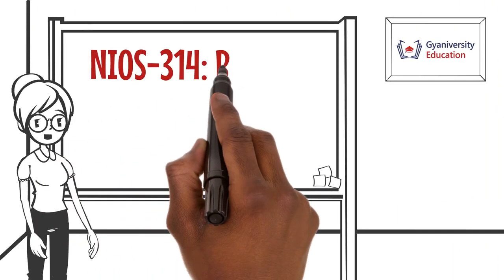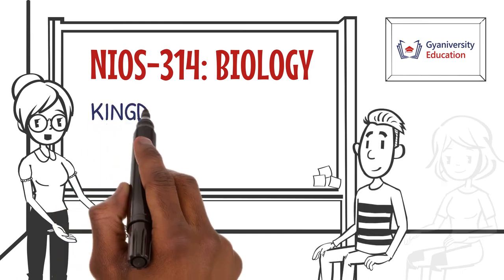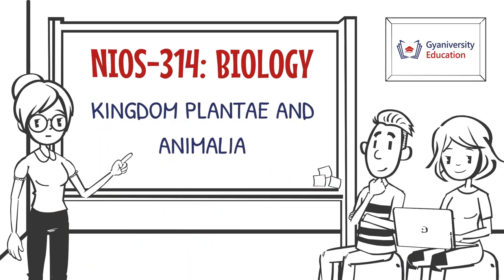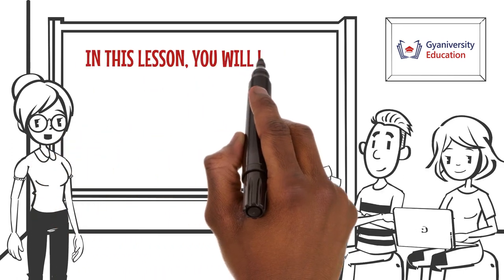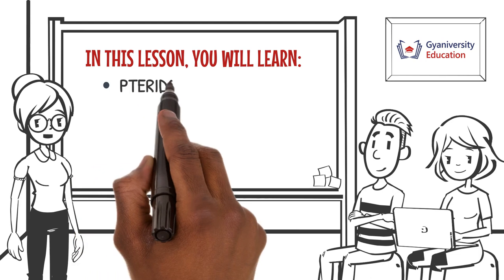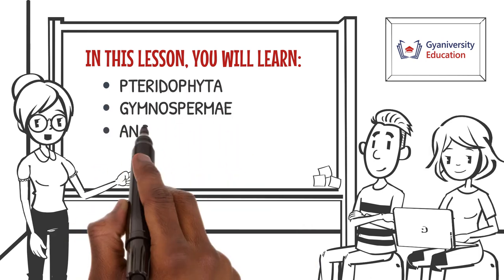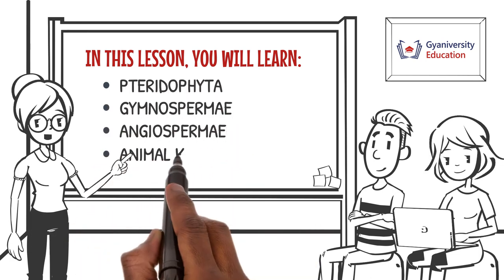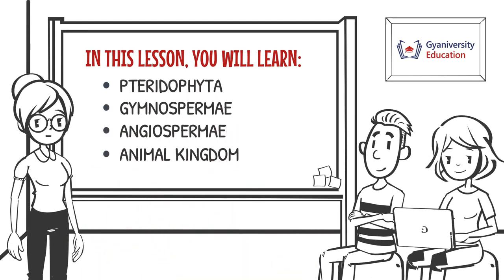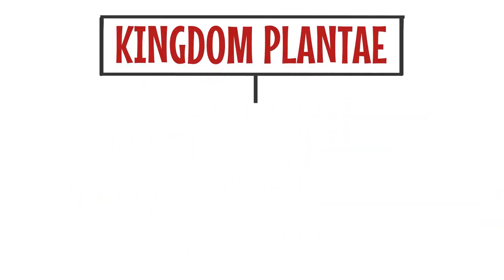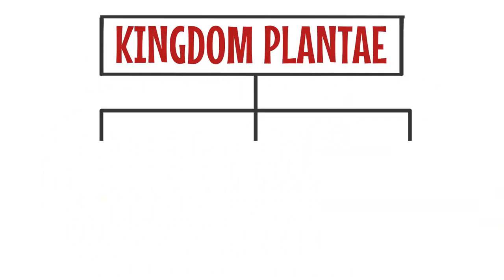Welcome to the biology lesson on Kingdom Plantae and Animalia. In this lesson, you will learn about Pteridophyta, Gymnosperma, Angiospermia, and finally Animal Kingdom. Today, we are going to explore Kingdom Plantae and discover the main divisions of Kingdom Plantae.